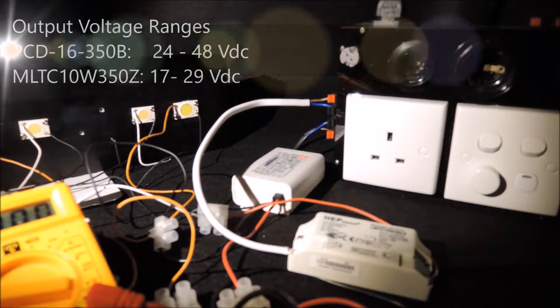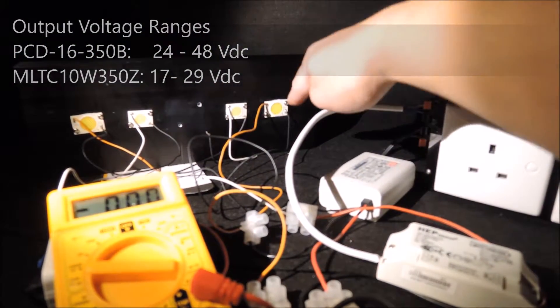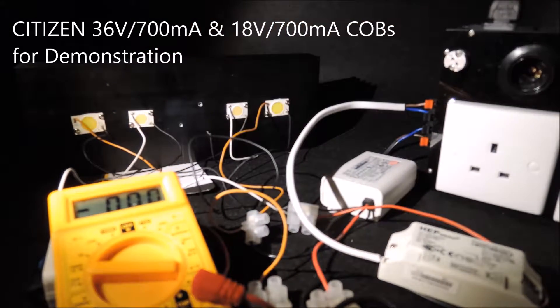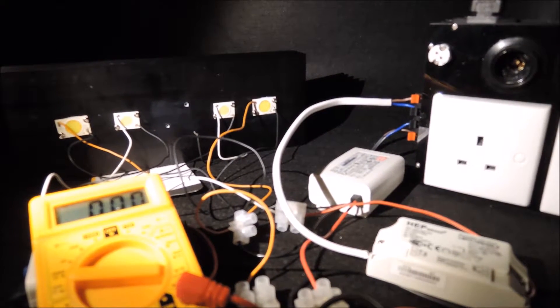Since both drivers have different output voltage range, we have the drivers connected to the 36V 700mA and 18V 700mA constant Citizen COB respectively for demonstration.